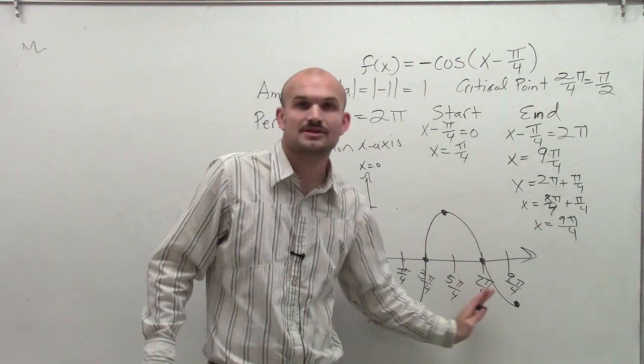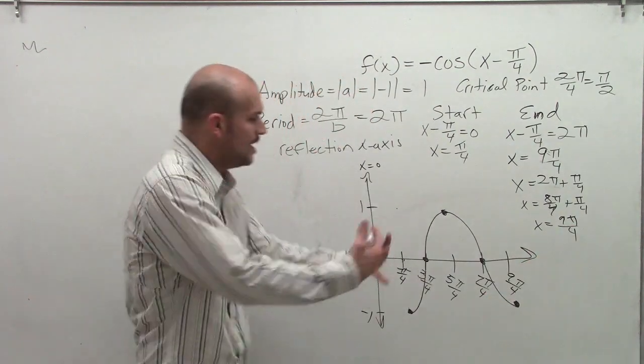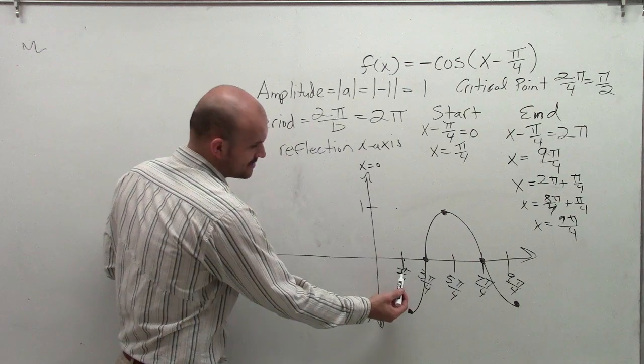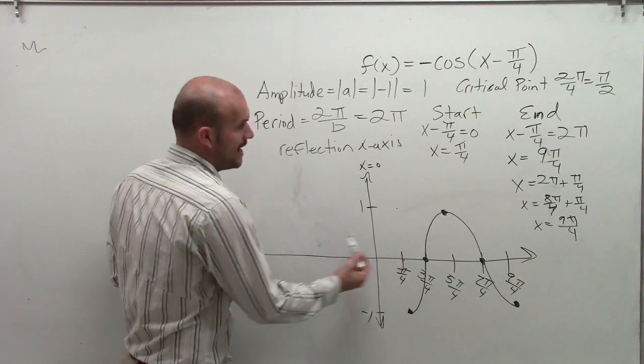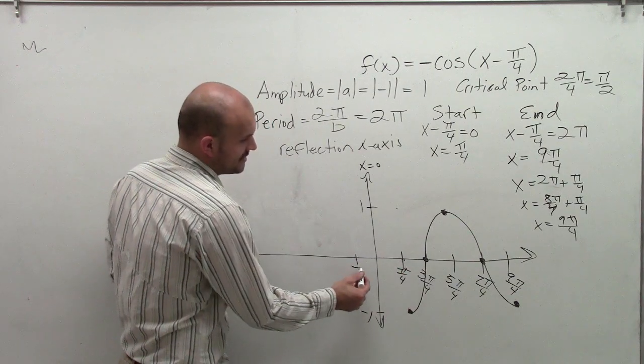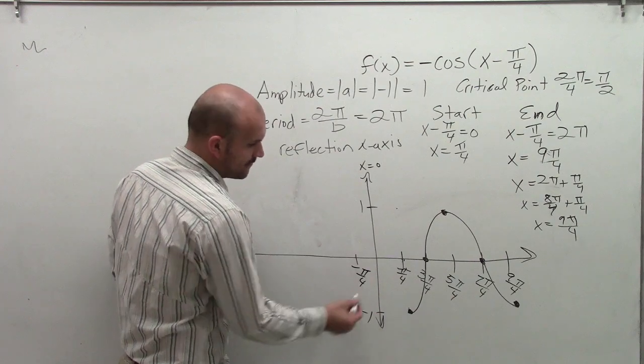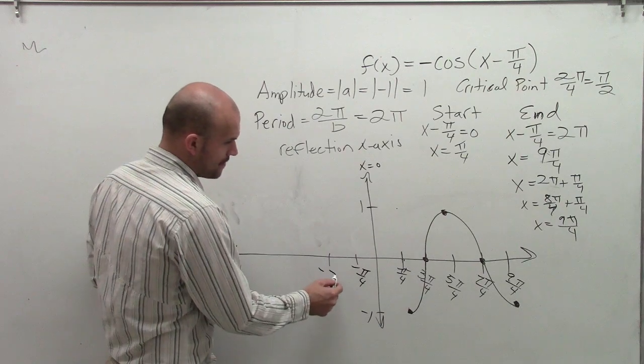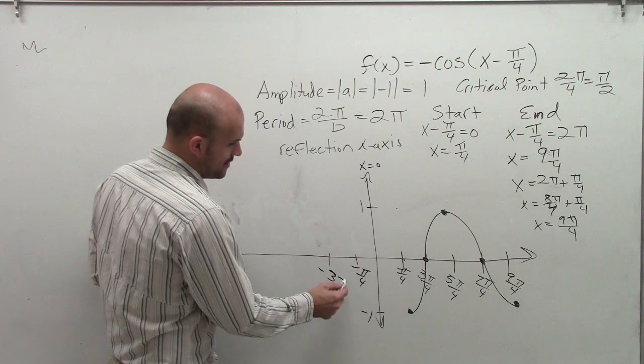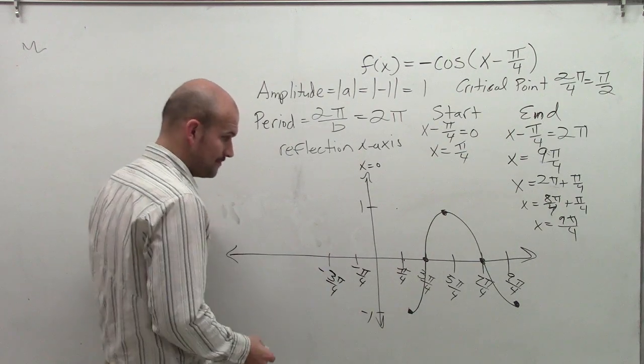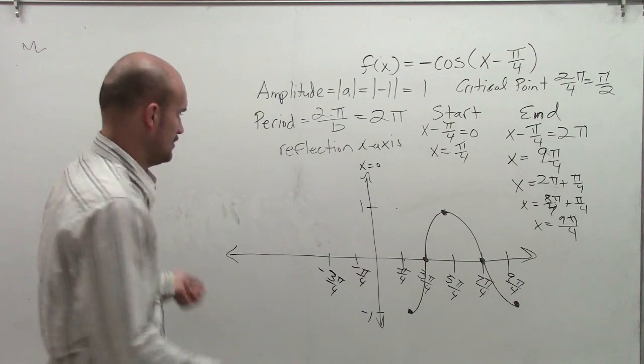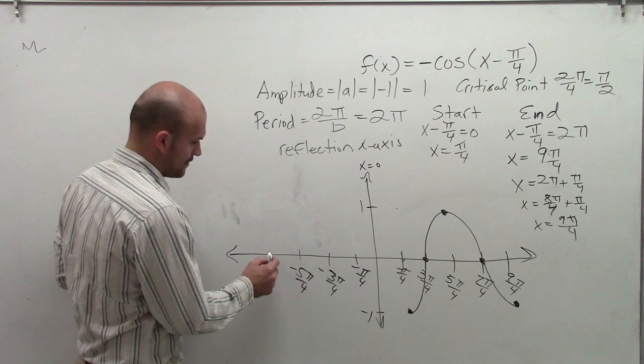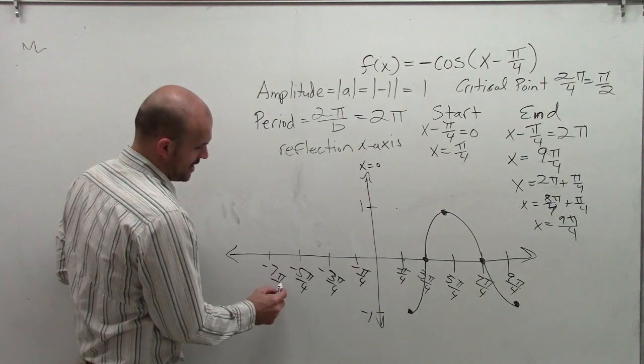So the first period of the graph is going to look something like this. Now remember, this graph is going to infinitely go to the right. So you can continue this pattern, but I'm going to work the pattern now in the negative direction. When I subtract pi halves from here, I'm now going to be at negative pi over 4. So that's actually going to be my next critical point. Then I'll have negative 3 pi over 4, then negative 5 pi over 4, negative 7 pi over 4.